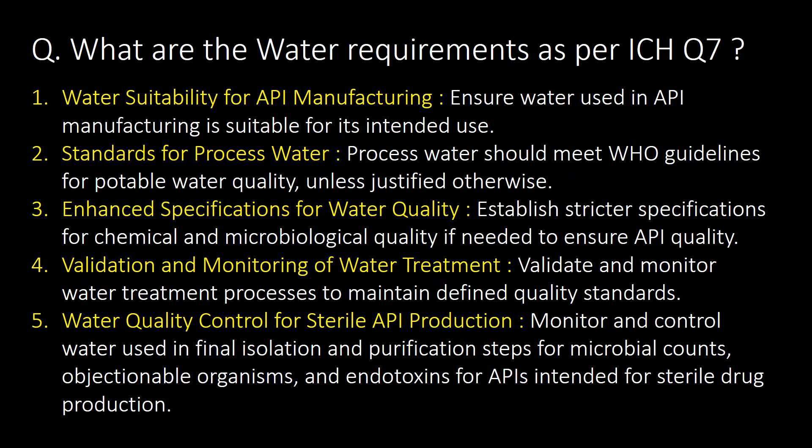What are the water requirements as per ICH Q7? Water suitability for API manufacturing, standards for processed water, enhanced specifications for water quality, validation and monitoring of water treatment, and water quality control for sterile API production are the important water requirements as per ICH Q7.